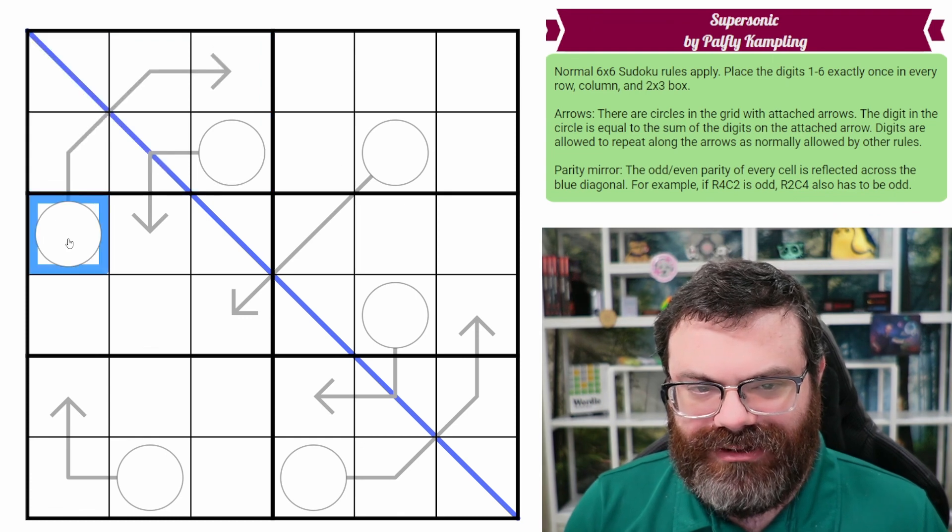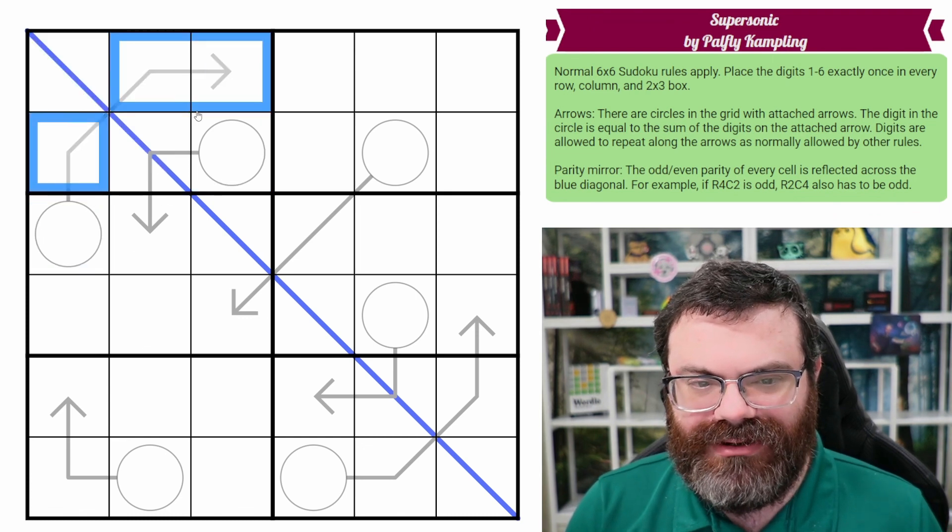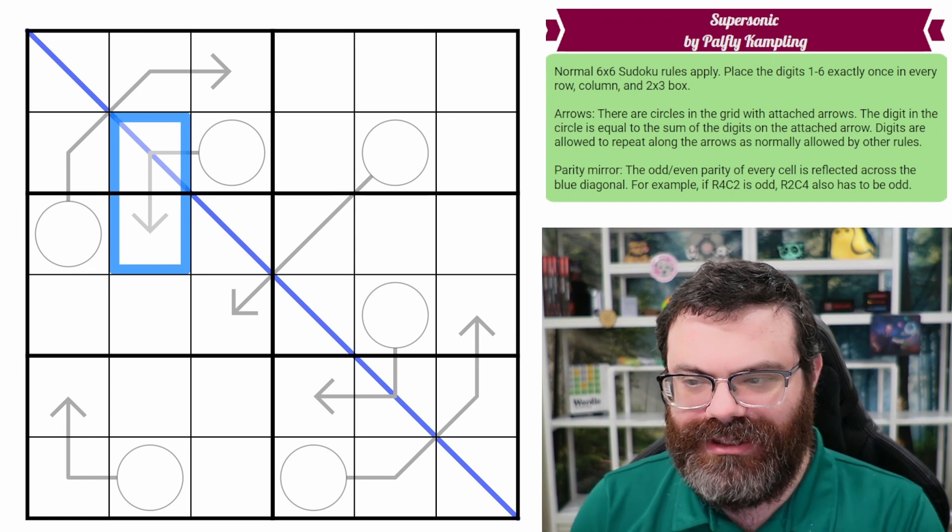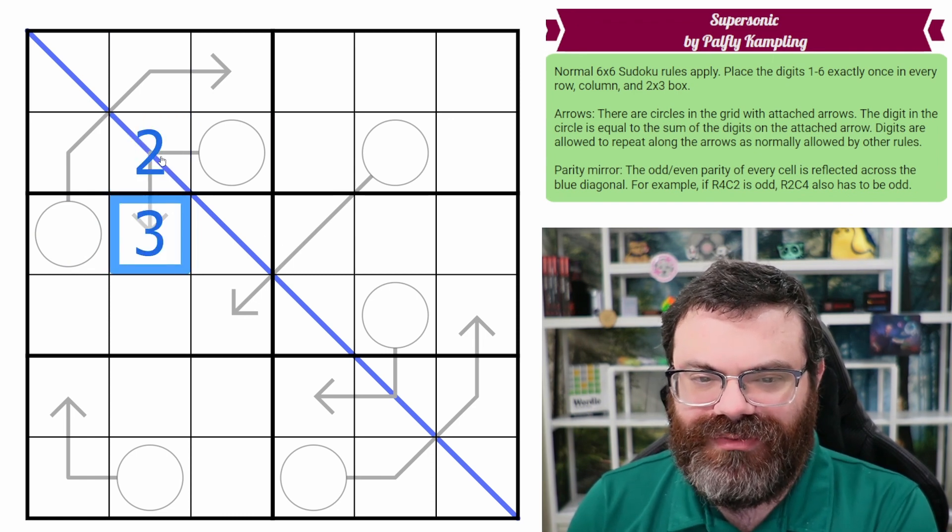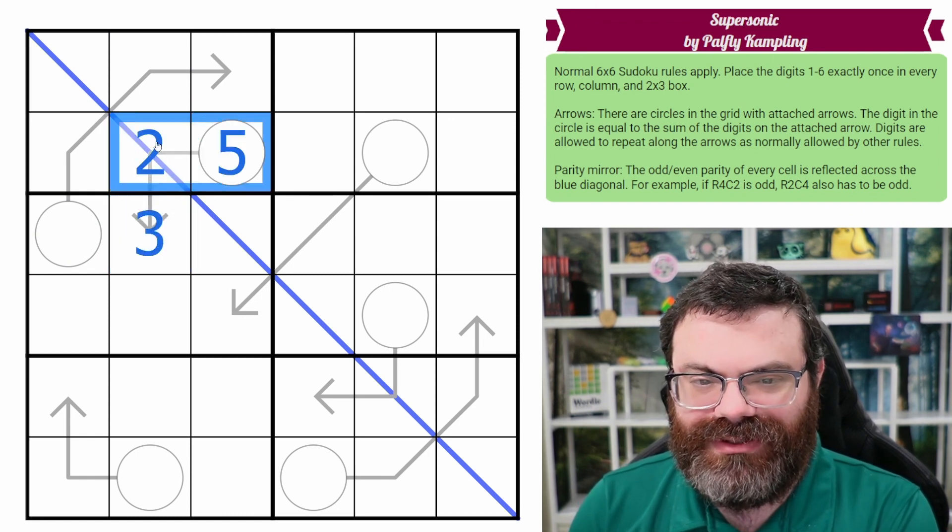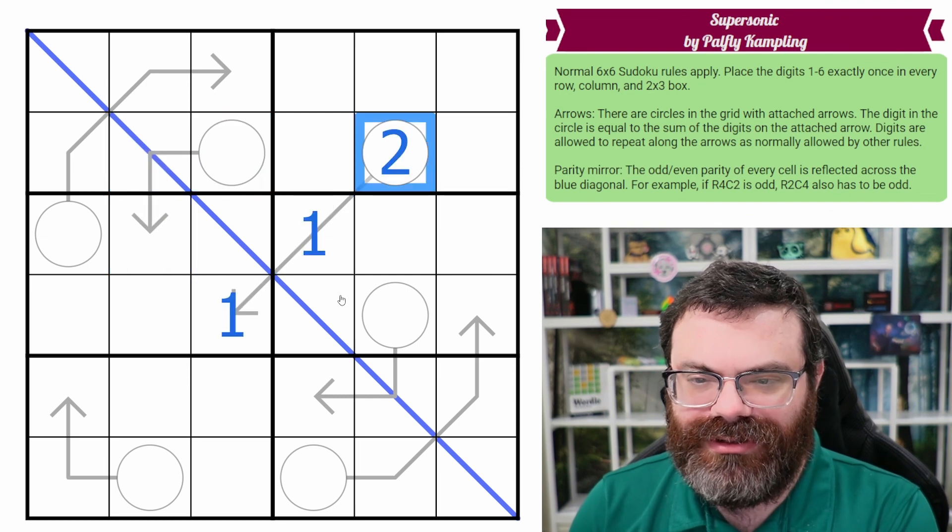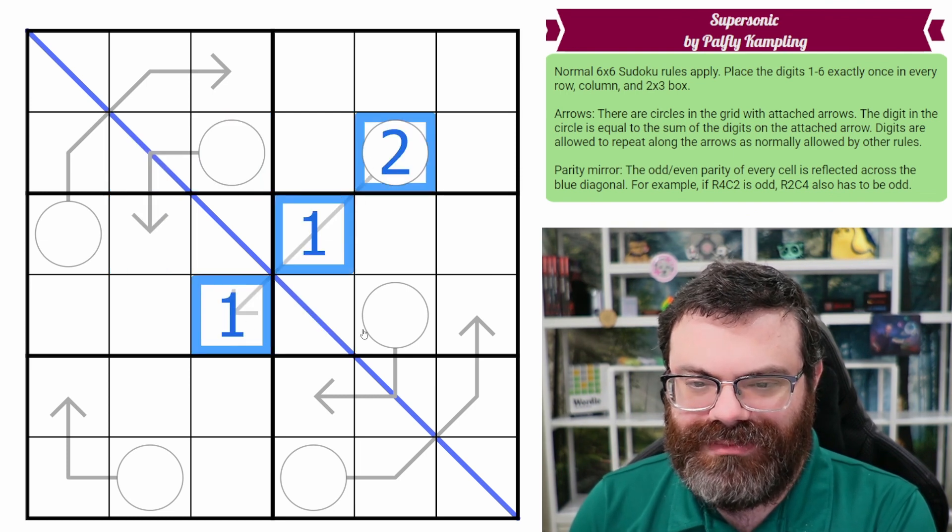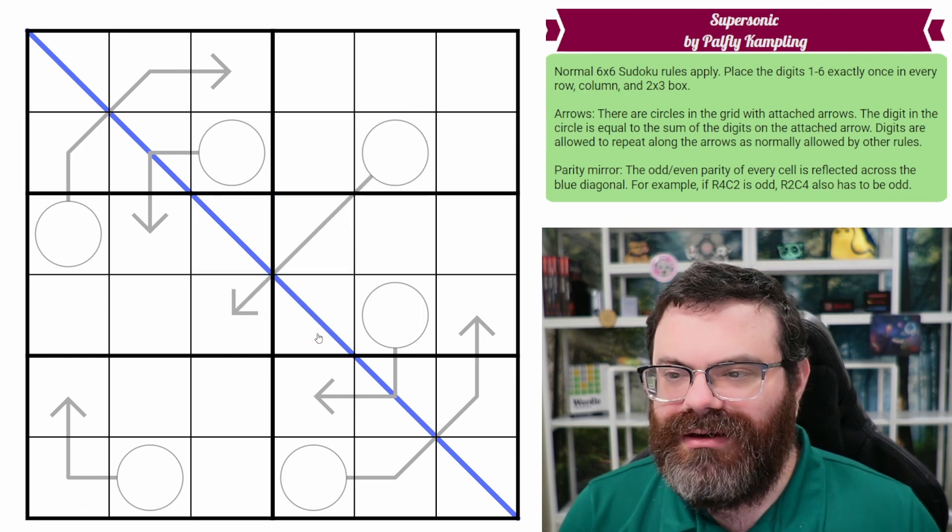We also have our standard arrows in our grid. So digits on an arrow sum to the value in the circle. So let's do a simple one here. If this was 2, 3, that sums to 5. You'd put a 5 in the circle. Digits can repeat on a circle as long as Sudoku rules allow it. So this would be perfectly legal. 1 plus 1 is 2.